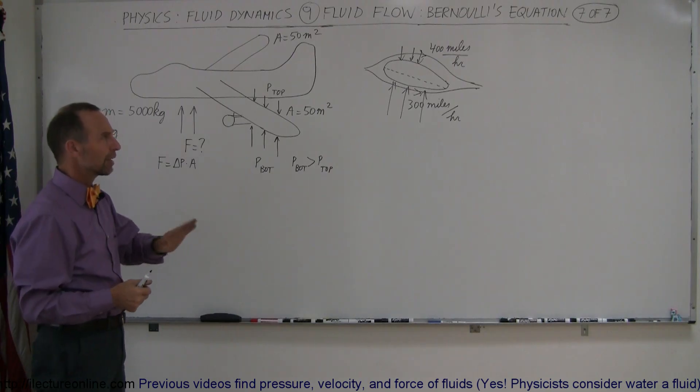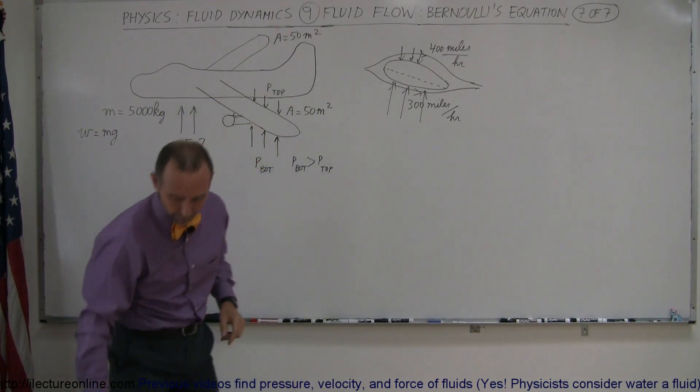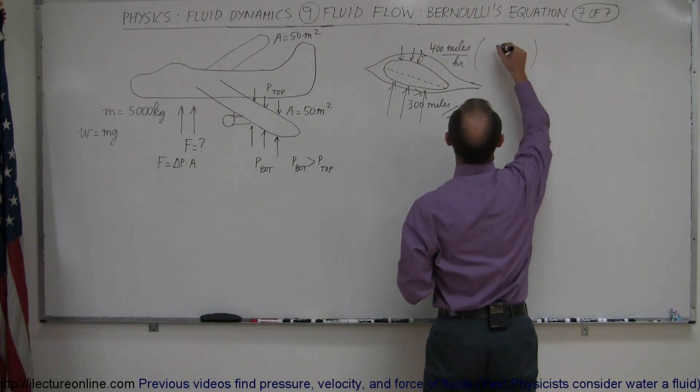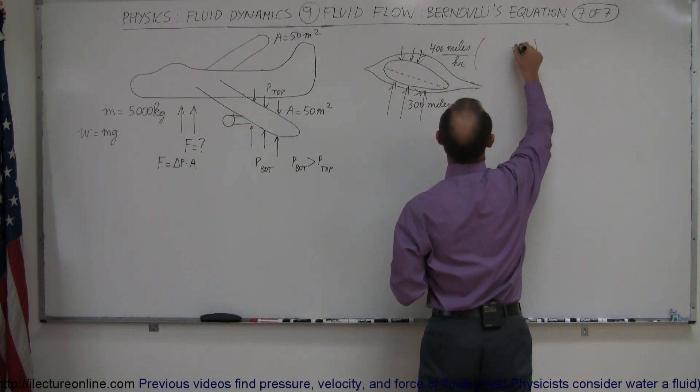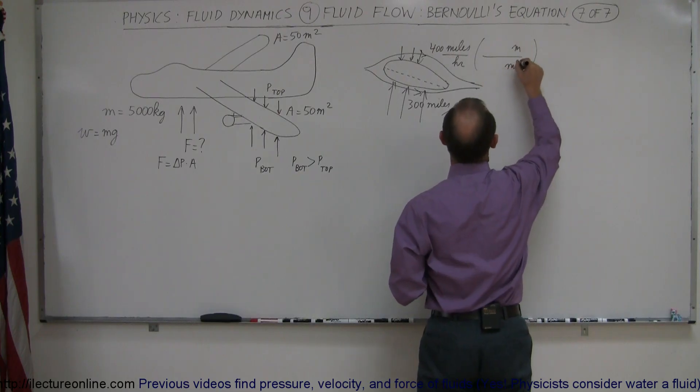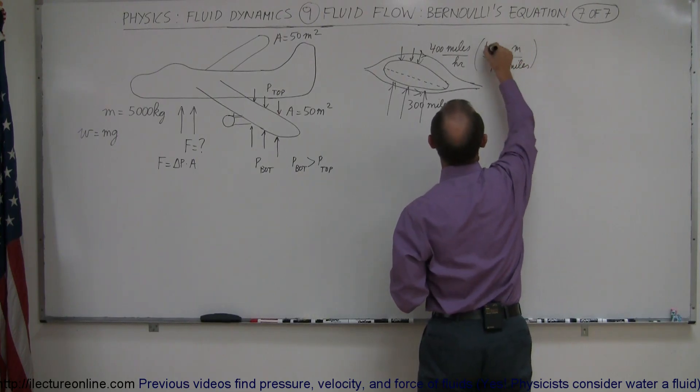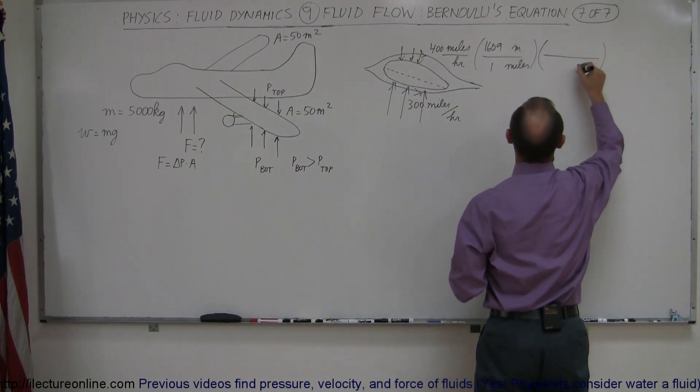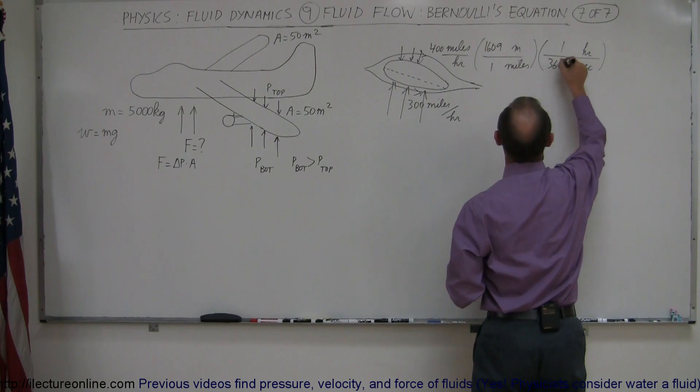Well, first, before we get started, let's convert the miles per hour into meters per second. And to do that, we have to go like this. This is equal to, we need meters at the top, we need miles at the bottom, and one mile is 1609 meters. And then we have to convert to seconds, so we need seconds at the bottom, hours at the top, one hour is 3,600 seconds.